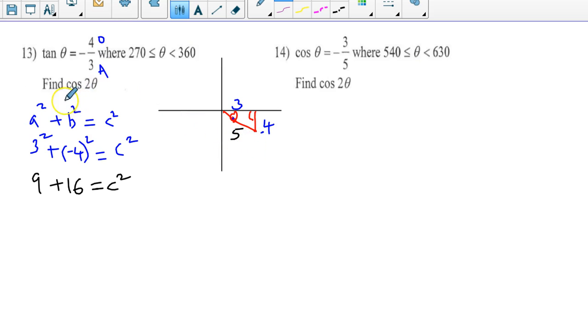That is your hypotenuse. Now you are looking for cosine 2 theta. The formulas for cosine 2 theta are: cosine squared theta minus sine squared theta, or 2 times cosine squared theta minus 1, and you can also have 1 minus 2 sine squared theta. Any one of these you will get the same answer. Let me make use of the first.